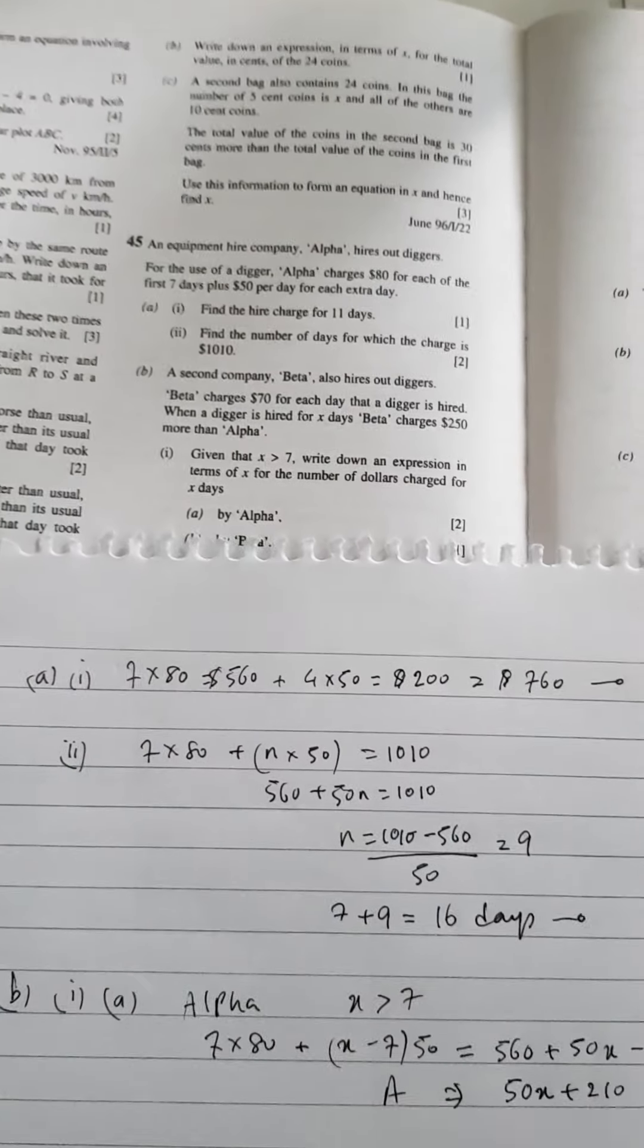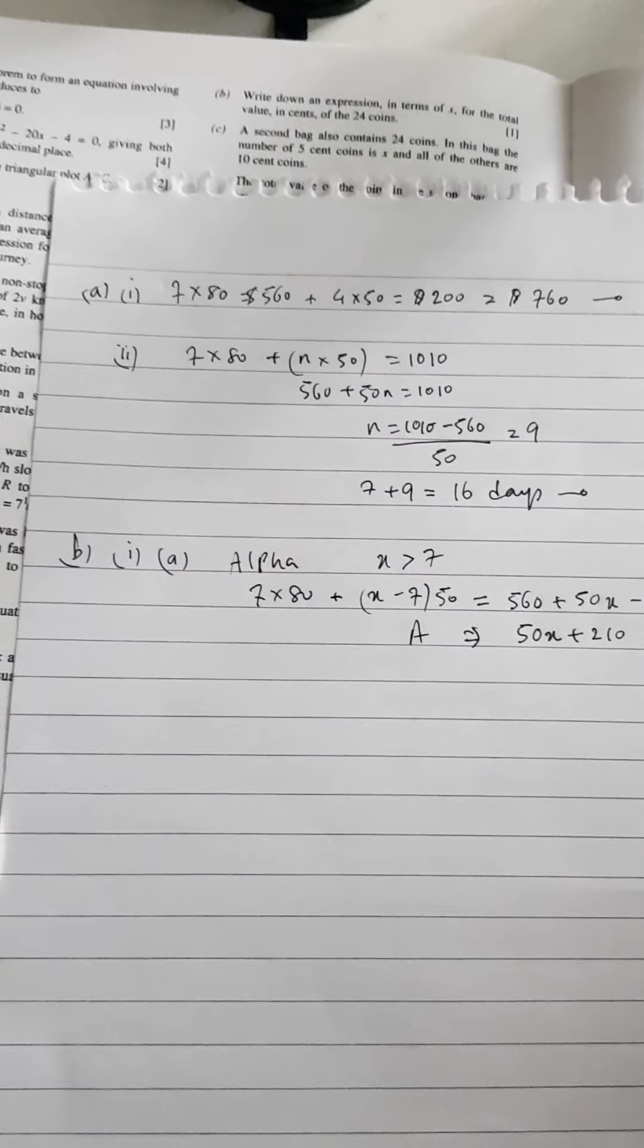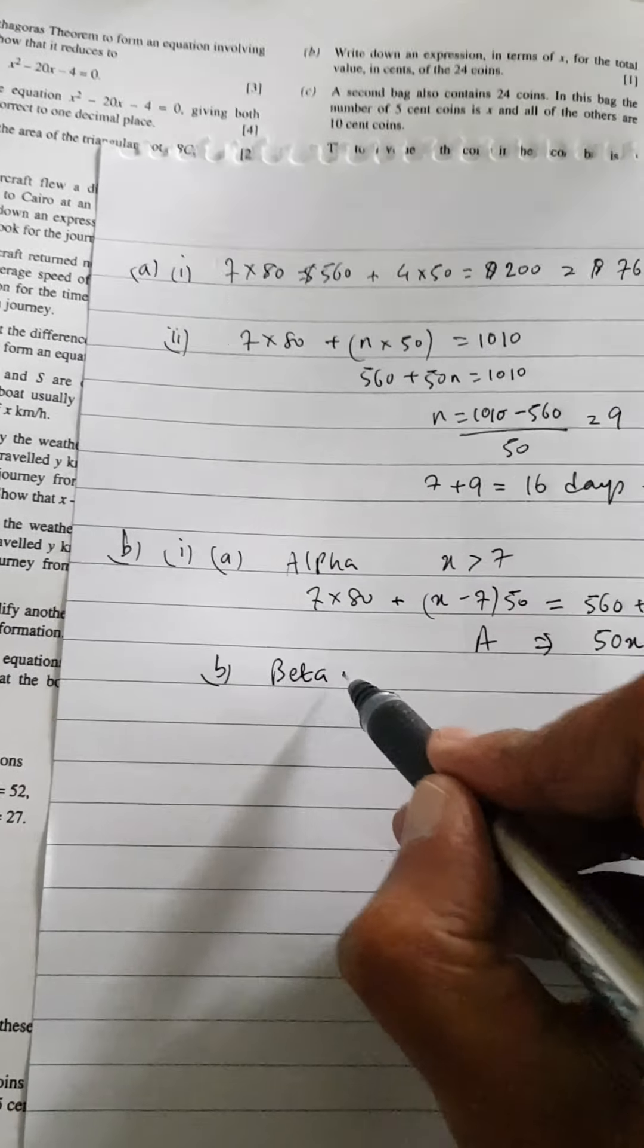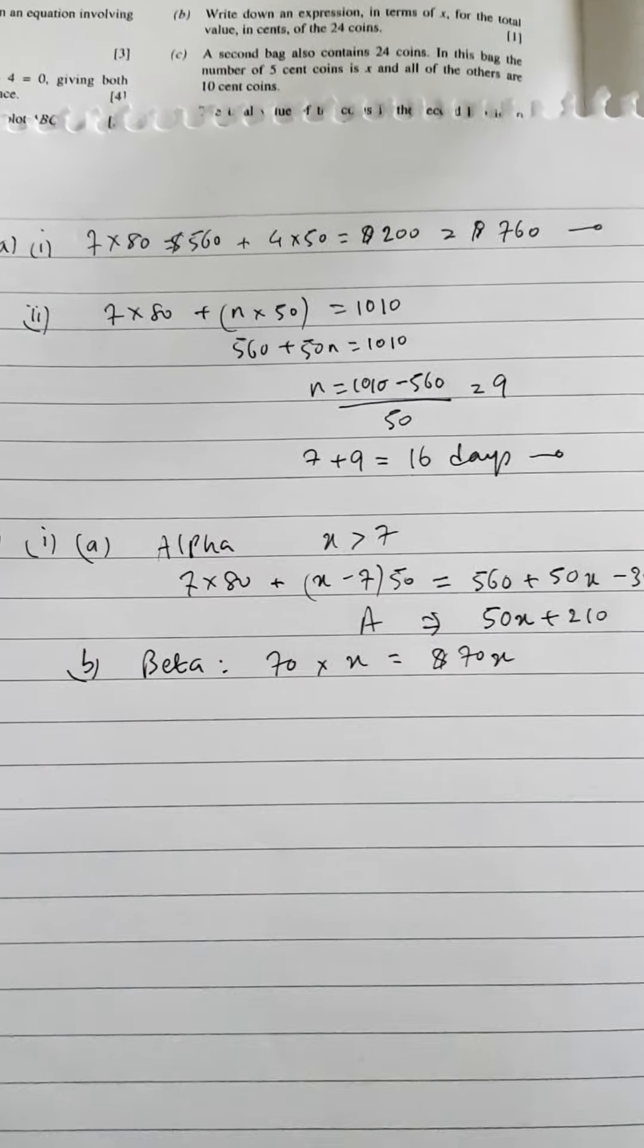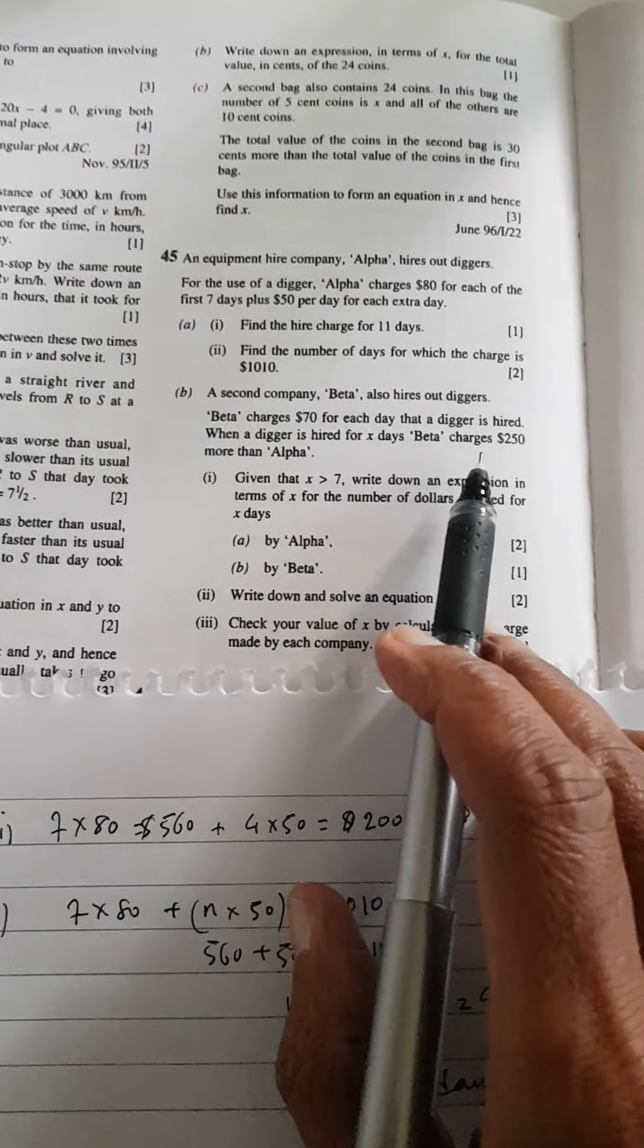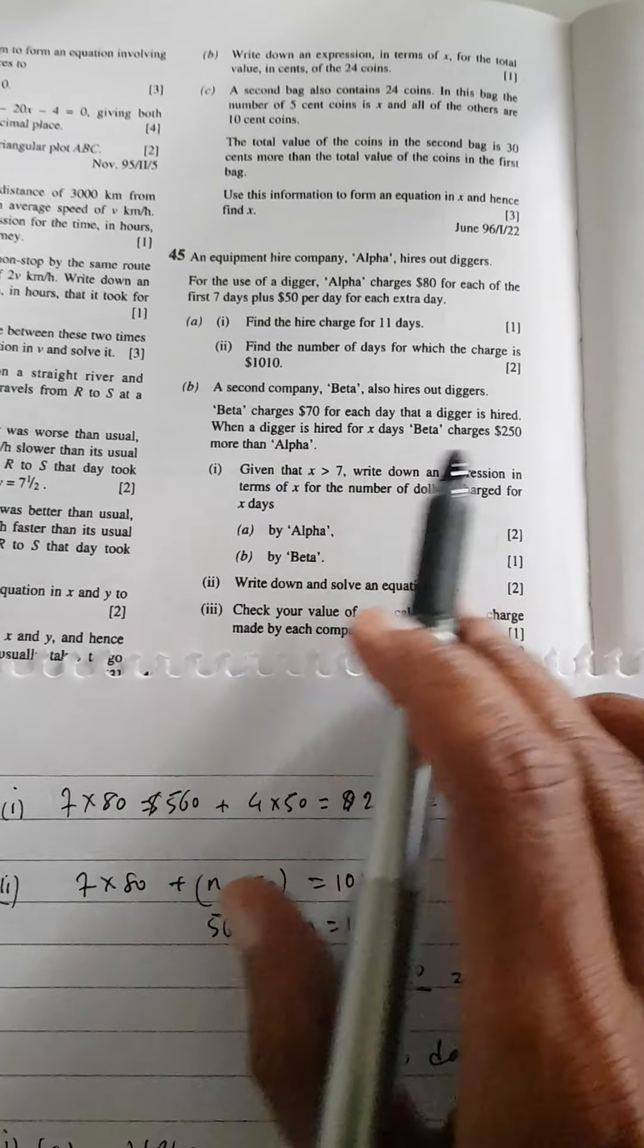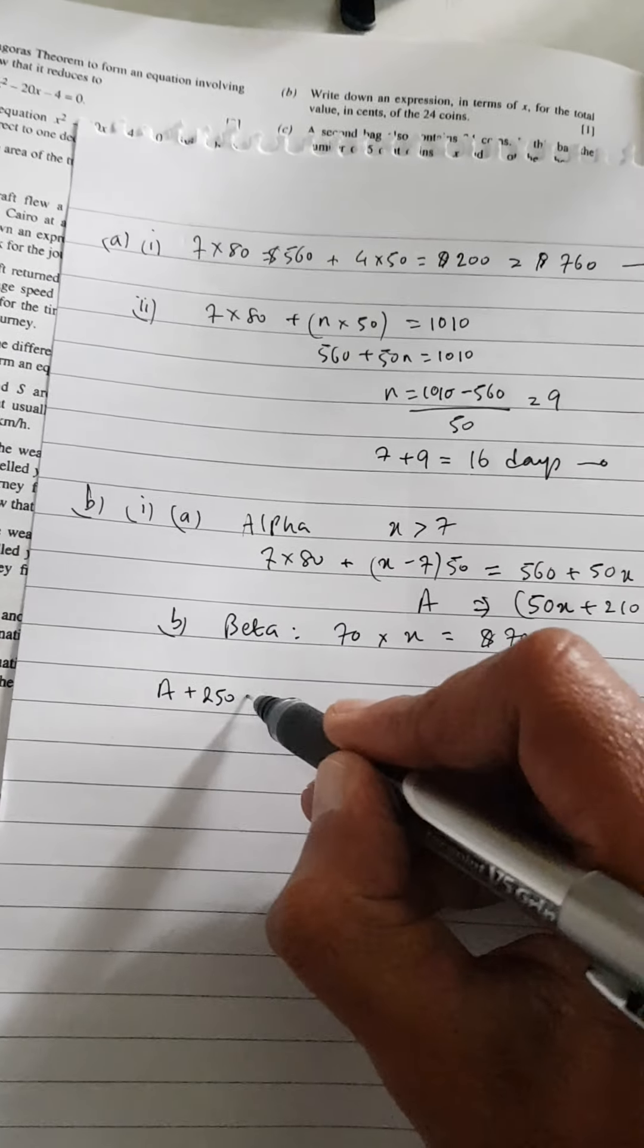Now, Beta. Beta is charging $70 for each day that the digger is hired. So Beta is going to charge 70 times X number of days, which is 70X dollars. So this is Alpha, and this is Beta. Remember, we are told that Beta is charging $250 more than Alpha when it was hired for X number of days. So if Beta is charging $250 more than Alpha, we need to add $250 to Alpha to make it equal to Beta. So Alpha plus 250 will equal Beta.